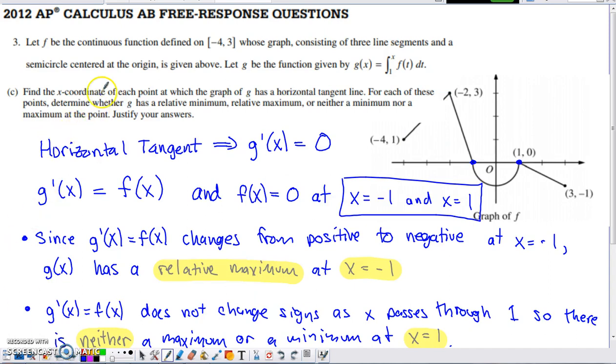Part C asks us to find the x coordinates where g is going to have a horizontal tangent line. A horizontal tangent line is a place where the derivative equals 0, right? The horizontal line has a slope of 0. If it's a tangent line, its slope has to be determined by the derivative. So you need to locate where g prime of X equals 0. That's pretty easy to do because we said g prime of X equals f of X. So we need to know when f of X equals 0 in order to figure out when g prime of X equals 0. That happens twice: at the X of negative 1 and at the X of 1. Here are the two locations where we have a horizontal tangent on the graph of g.